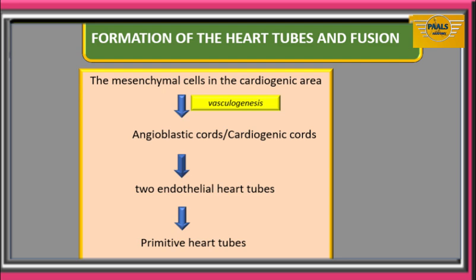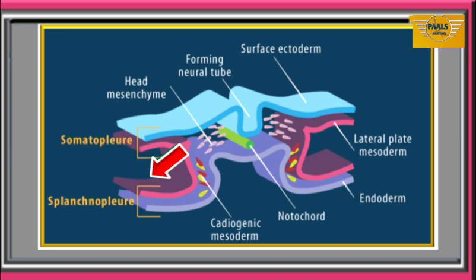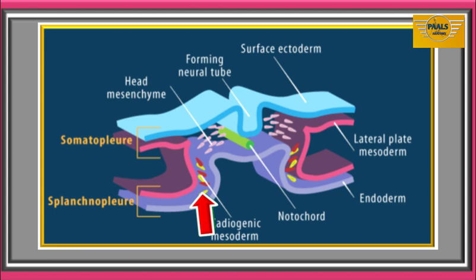The mesenchymal cells in the cardiogenic area condense to form two angioblastic cords called cardiogenic cords, also through the process of vasculogenesis. These cords get canalized to form two endothelial heart tubes. We can see the developing neural tube at the stage of the neural groove, with paraxial mesoderm, somatopleuric mesoderm, and splanchnopleuric mesoderm, with the intraembryonic cavity between them. Within the splanchnopleuric mesoderm are the cardiogenic cells giving rise to the endothelial heart tubes.